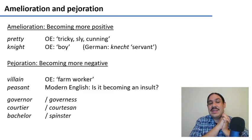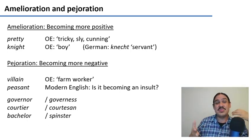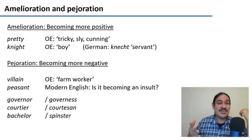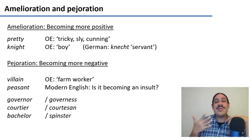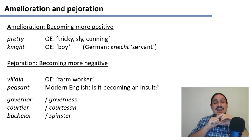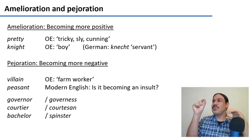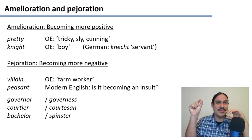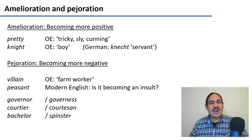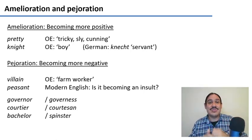Amelioration means taking a word and making it more positive. For example, 'pretty' used to mean tricky or sly — it was not a compliment — but nowadays it means something agreeable or attractive. 'Knight' used to mean boy, and it was a neutral word for boy, but it became ameliorated and became the word for the brave person in armor. Compared to its cognate in German, 'Knecht,' which to this day means servant — it still keeps the negative aspect of the original word.